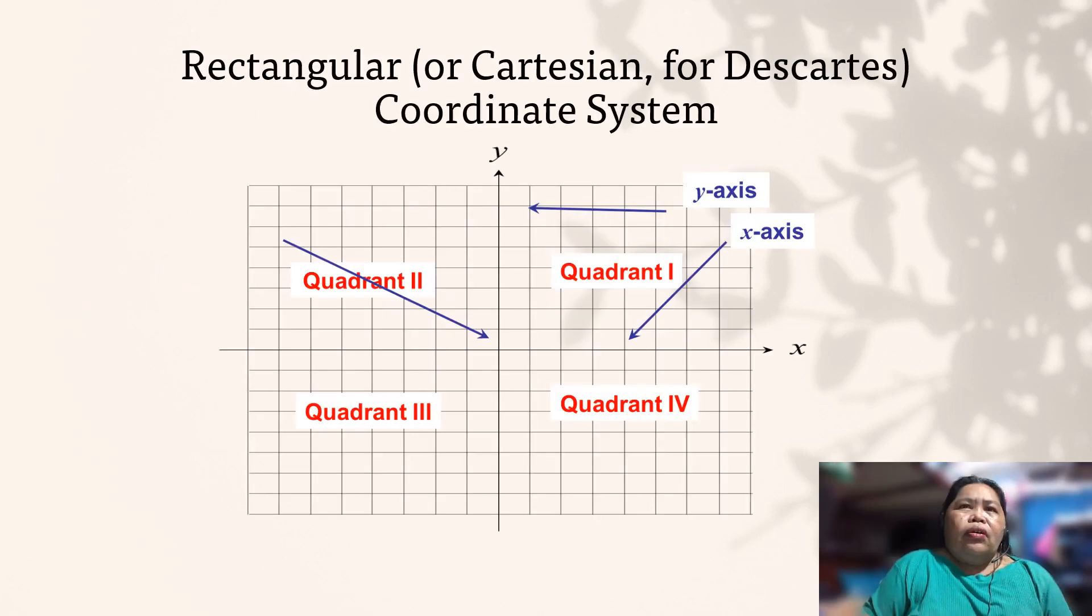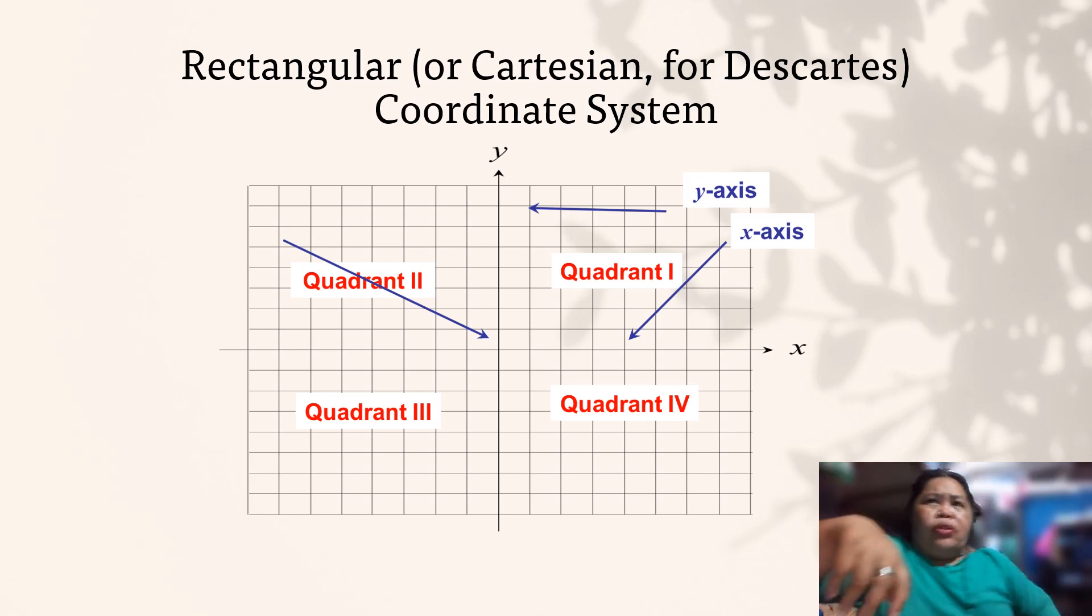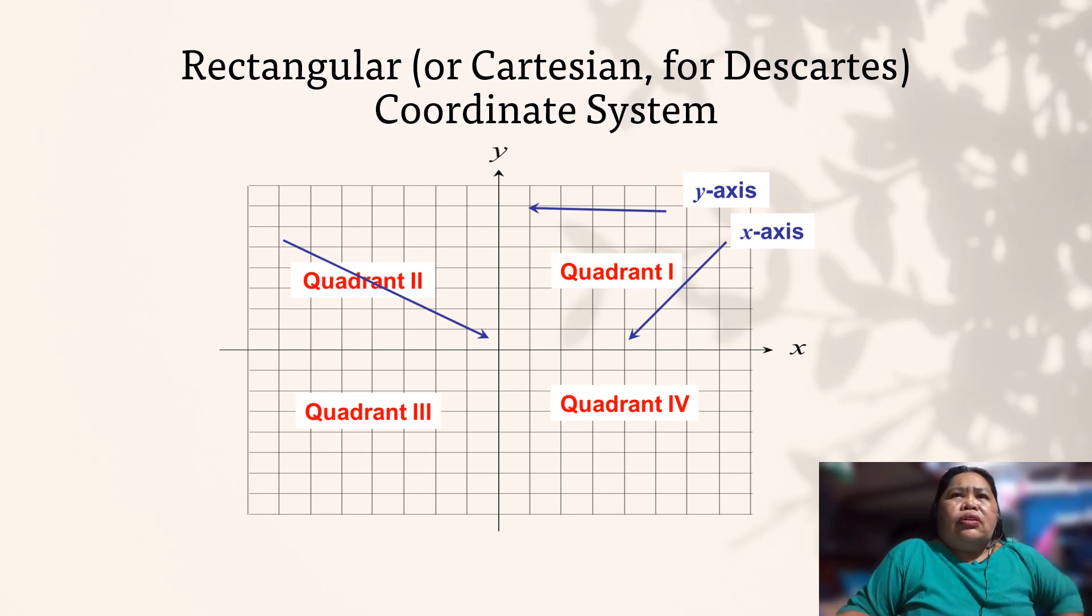Alright, so we have here the rectangular coordinate system, or the Cartesian - for Descartes, it is Cartesian - but it's commonly called the rectangular coordinate system. We have here the x-axis and the y-axis, and this is quadrant one. We have quadrant one, quadrant two, quadrant three, and quadrant four. At the center is the origin, which is zero. This is our origin.